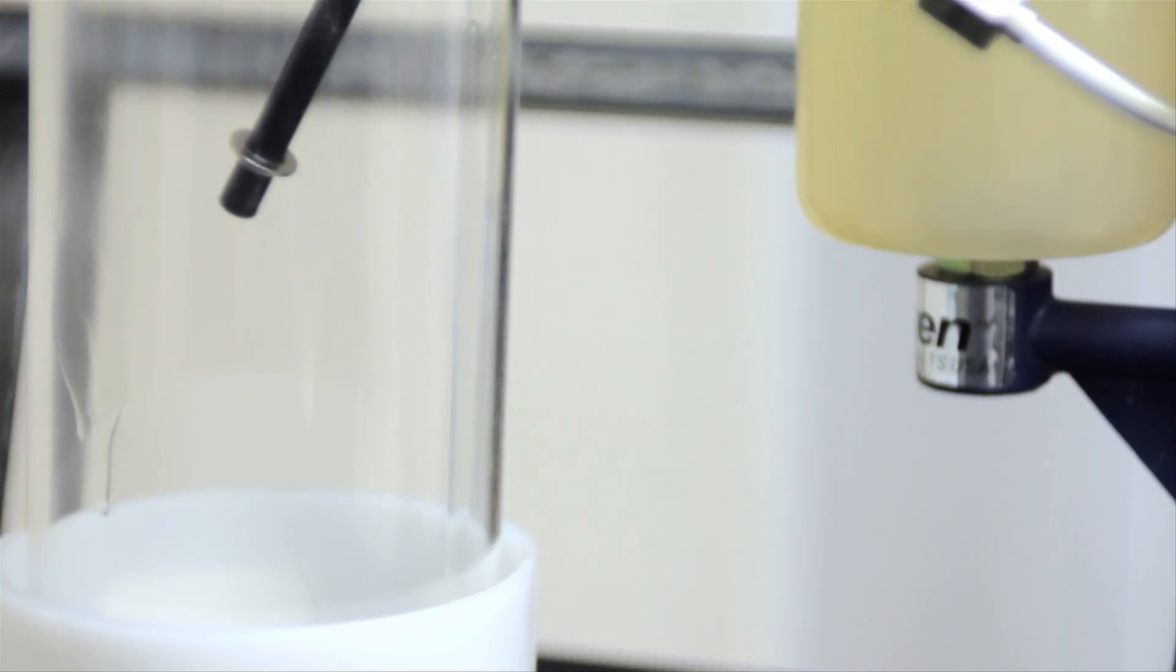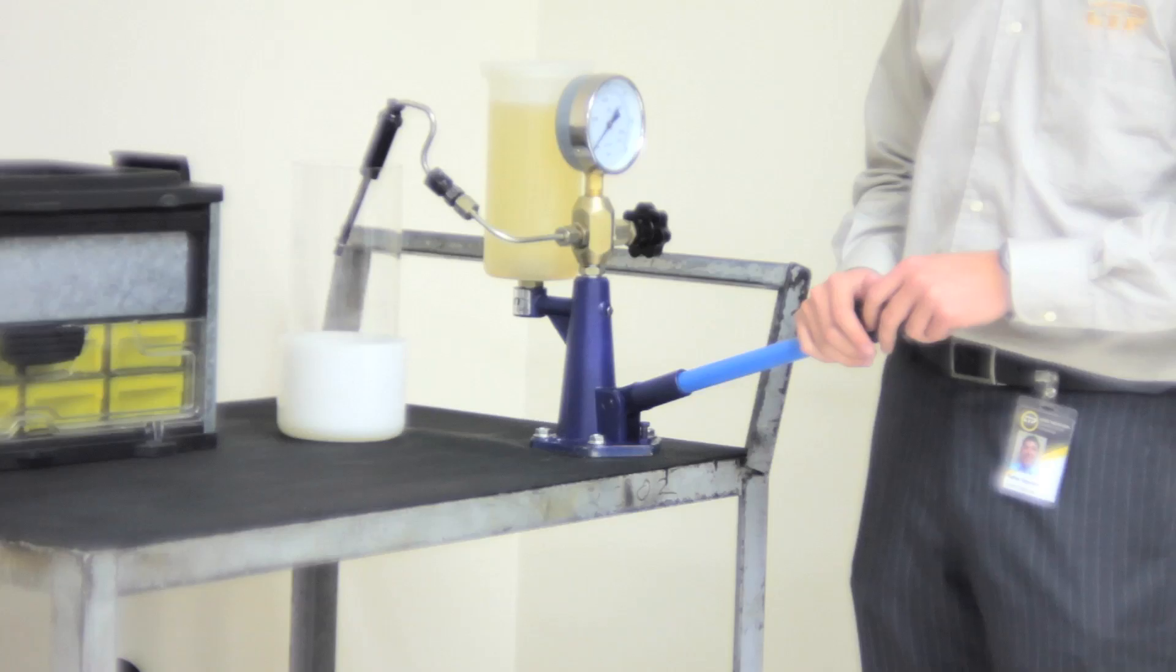At CTP we constantly check and inspect the accuracy and productivity of our parts to make sure they perform in the machine the way they were meant to be.